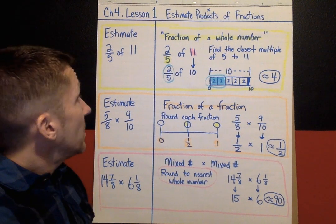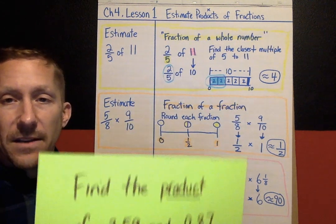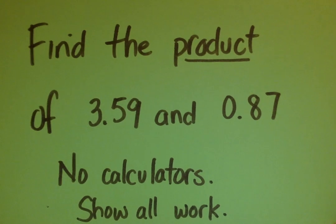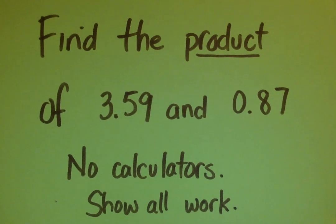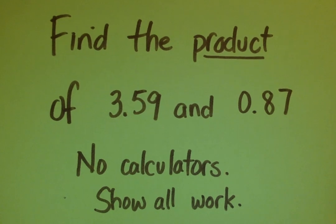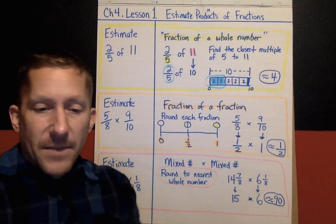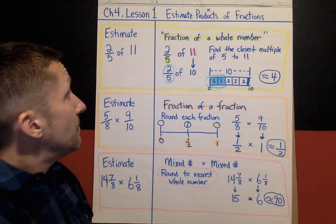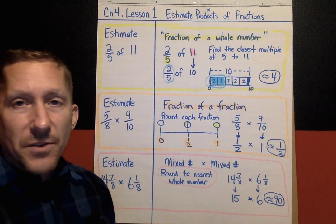That's it for Lesson 1. Your hidden treasure today is solving this problem: find the product of 3.59 and 0.87 — you may not use a calculator, you have to show all your work. That's something we did in the last chapter. I will see you very soon for Chapter 4, Lesson 2.